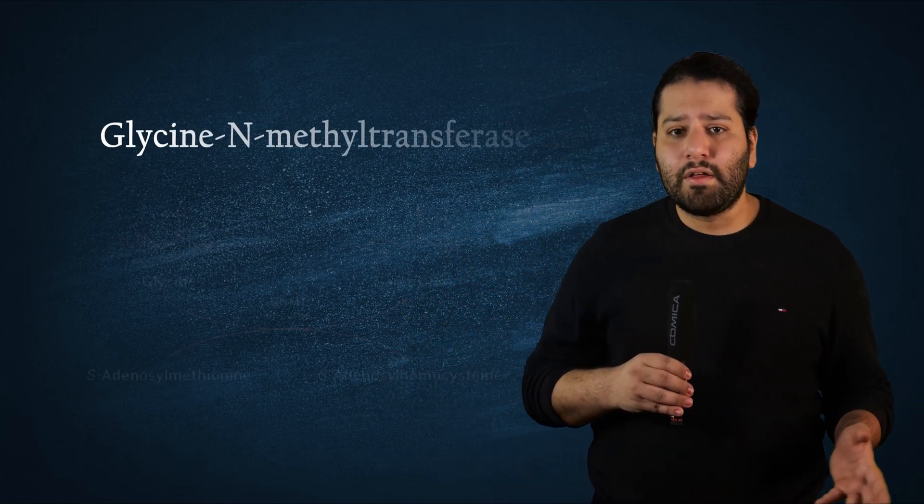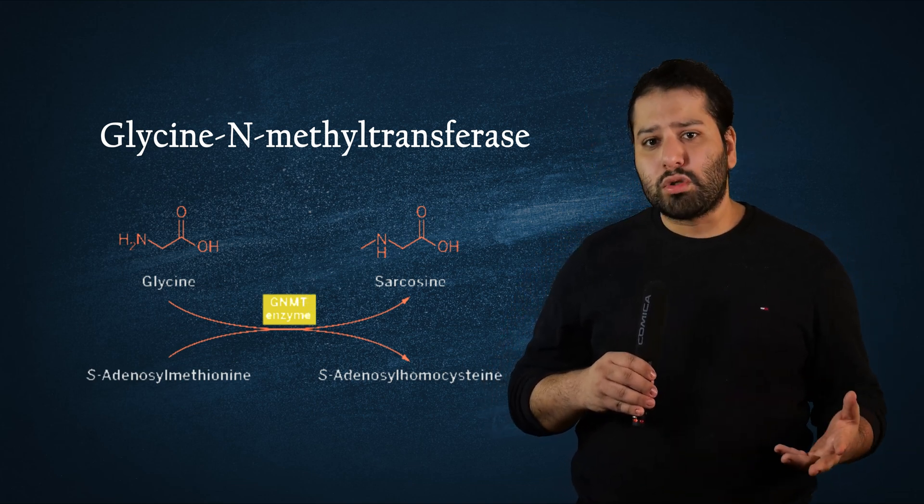Well, if you think about it, just like methionine needs to be broken down into its breakdown product, methionine's breakdown product, SAM, also needs to be broken down. And SAM is broken down by an enzyme called glycine N-methyltransferase. Let's just call it GNMT for short.